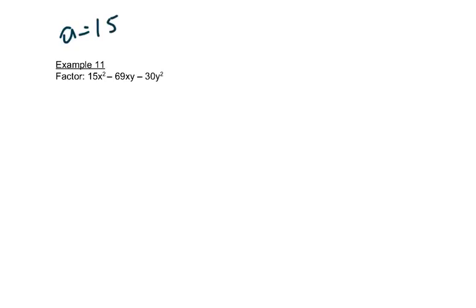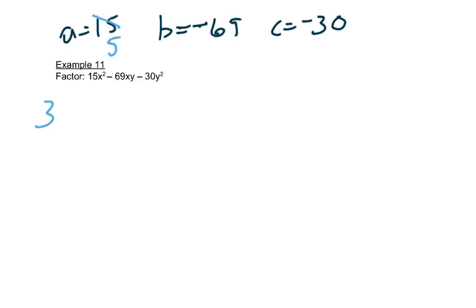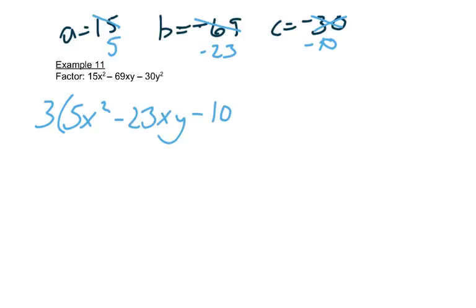In this example, A is 15, B is negative 69, and C is negative 30. There is a greatest common factor — 3 goes into all of these. Dividing 15 by 3 gives 5, negative 69 divided by 3 gives negative 23, and negative 30 divided by 3 gives negative 10. So we put that 3 out in front. Now there are no letters that they all share, so the X's and Y's stay the same: we have 5X squared minus 23XY minus 10Y squared.